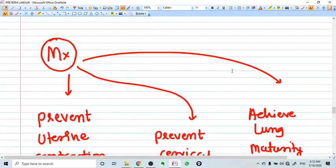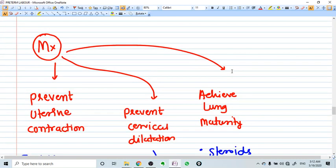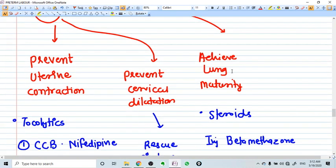Now, what is the management? Management is simple if you understand the concept. We need to prevent uterine contraction, we need to prevent cervical dilatation, and we need to achieve lung maturity if fetal labor is less than 34 weeks.